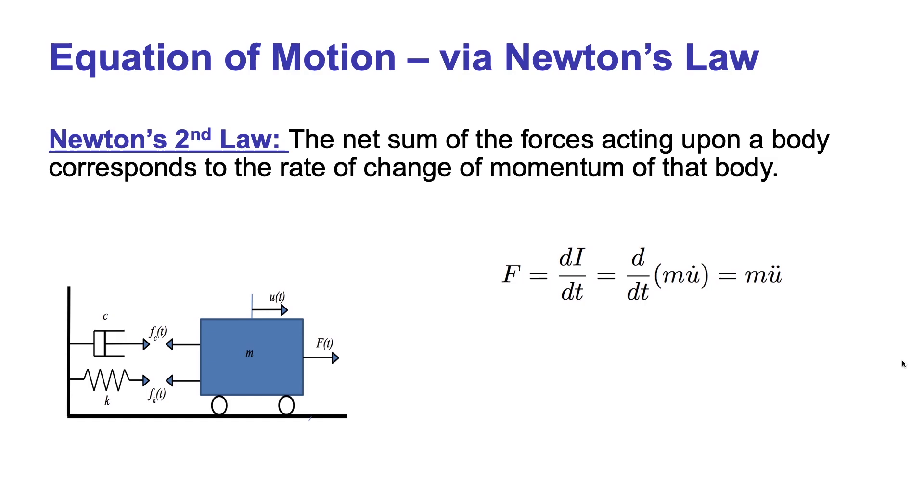If we go back to our representation of the single degree of freedom system, we can now evaluate F. As we said before, F is the net sum of forces acting upon the mass M. In this case, the sum of F_k, F_c, and big F. And all that will be equal to the rate of change in momentum of that body, or mass times acceleration.